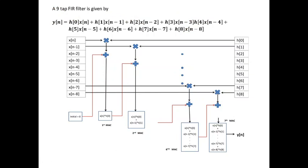We can see that x(n) is the input and x(n) is delayed one by one until x(n-8) for a 9-tap FIR filter.